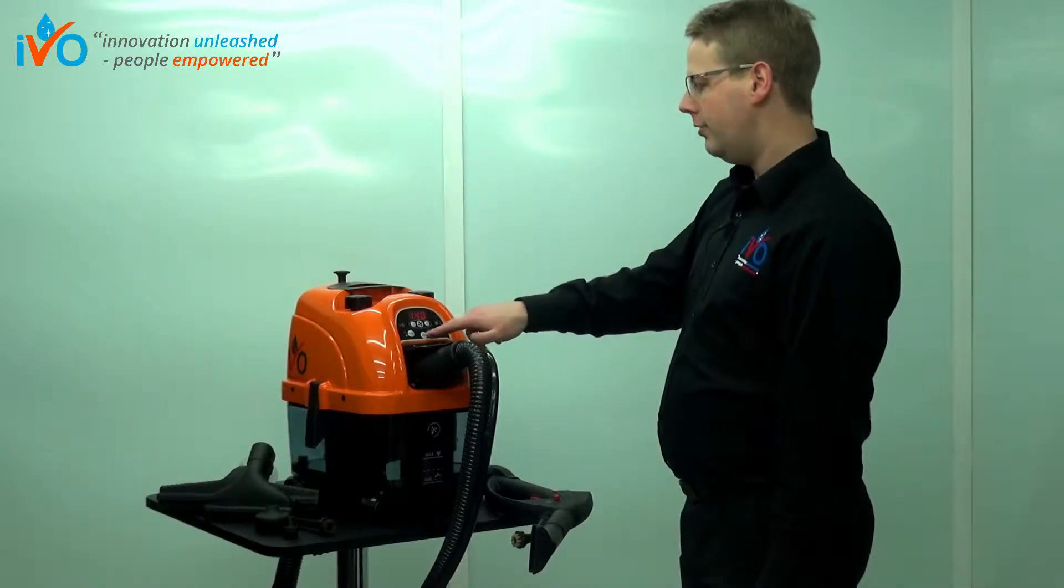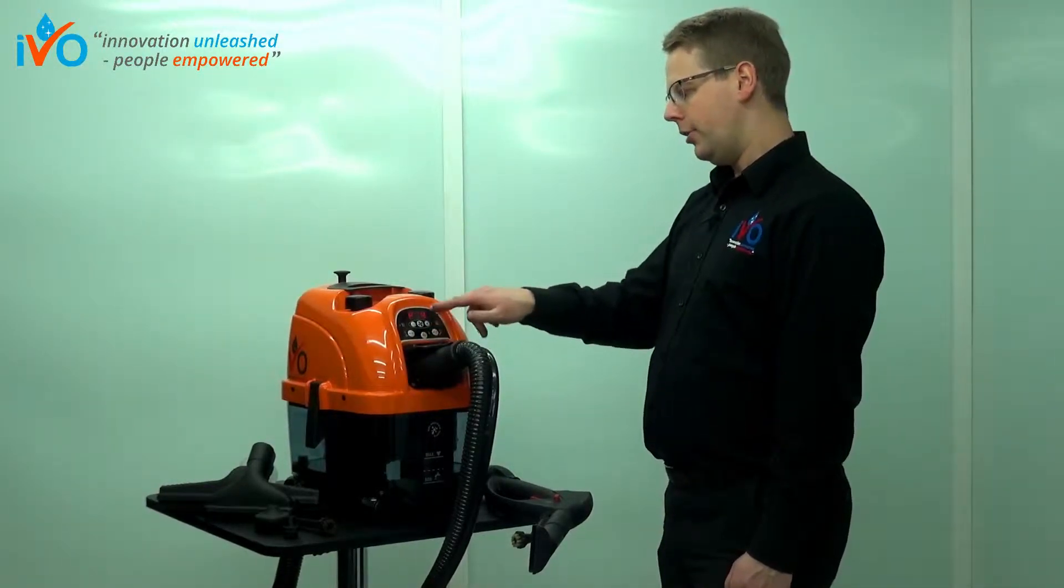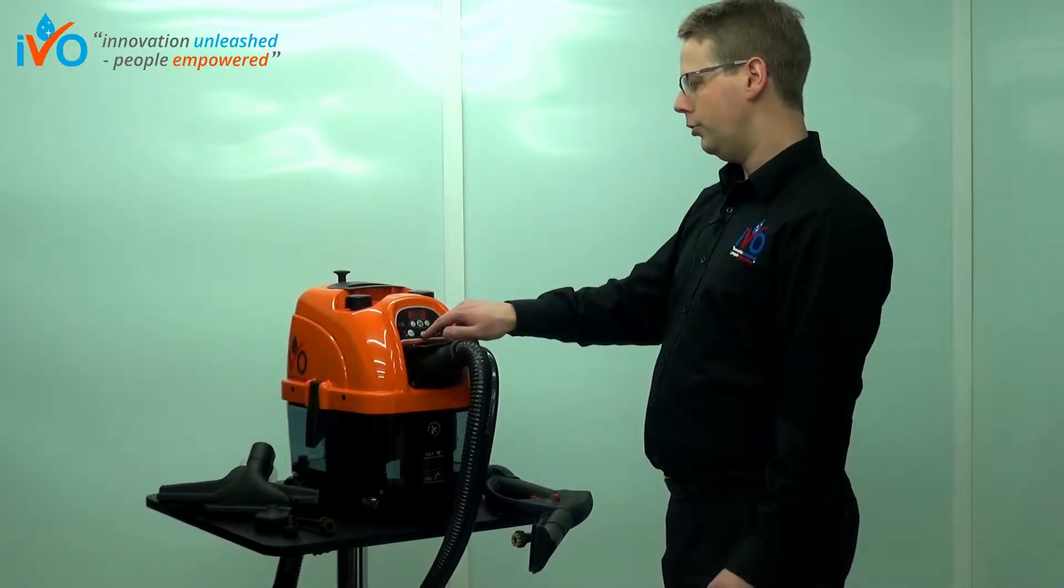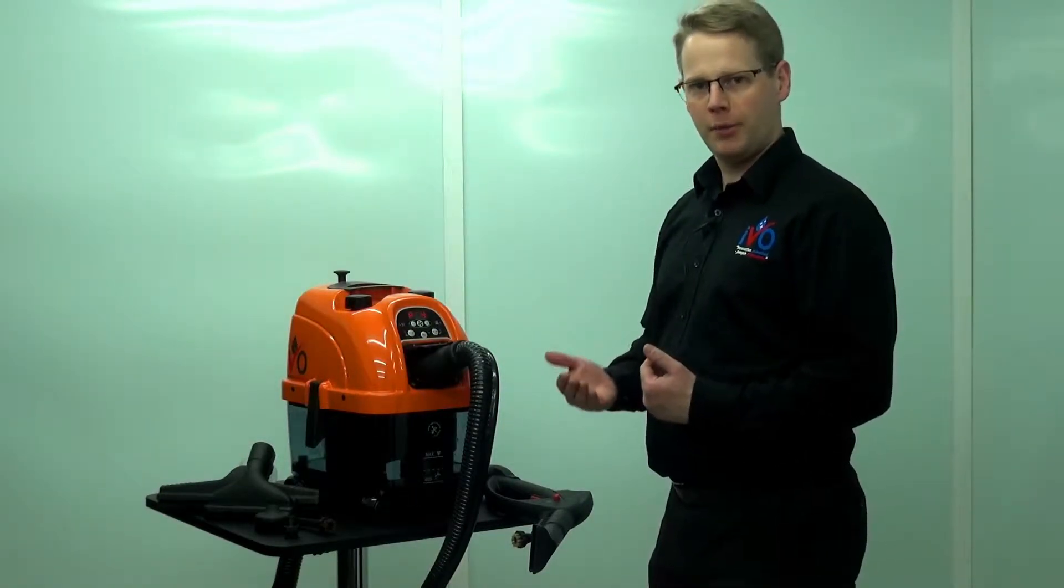Now it's got four levels of detergent available on here with this little button in the middle at the front. Now if I turn it on, you'll see it's on level four. I can turn it to level one, two, three or four. That's four levels of detergent amount coming out with the steam.